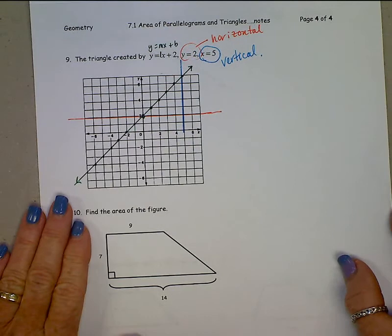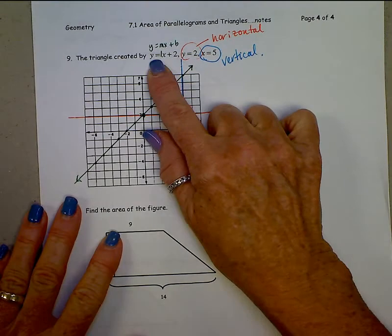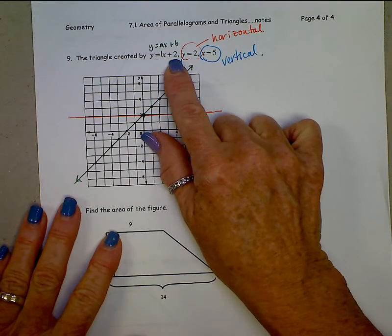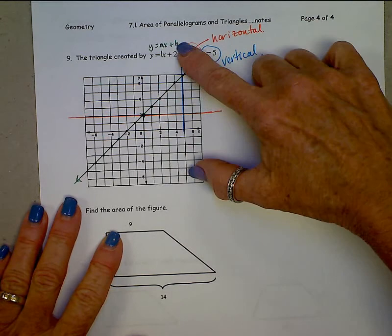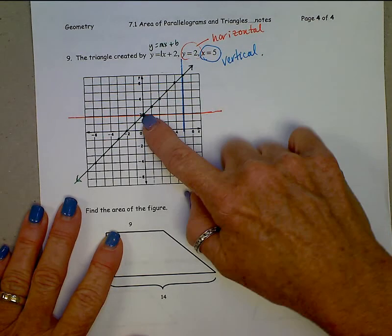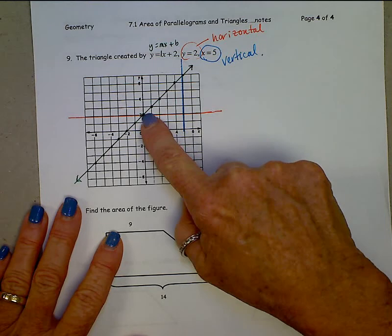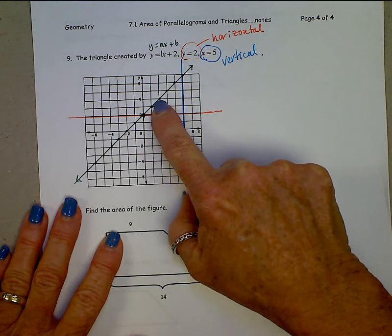Finishing it from yesterday, we graphed this line y equals 1x plus 2, y intercept was 2, slope is 1, so we start on the y axis and then count up 1 over 1, up 1 over 1, etc.